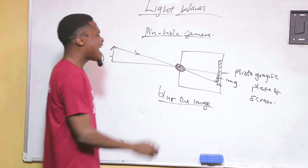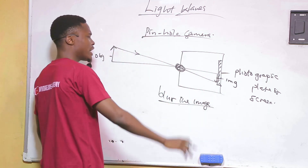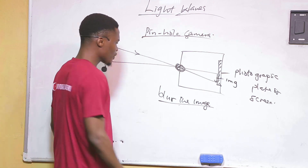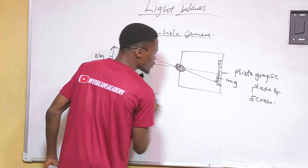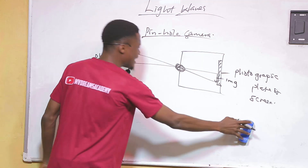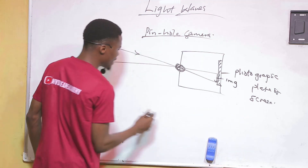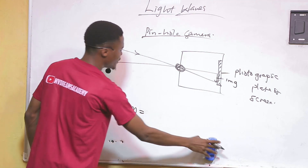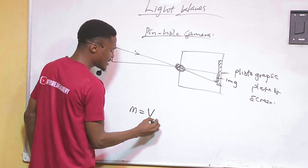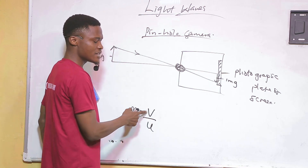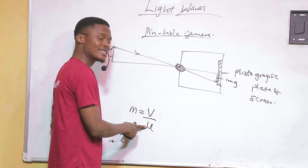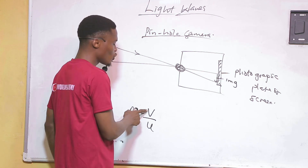The next thing they can ask about is the magnification of the image. M is used to represent magnification. You can find it in two ways: one way is image distance over object distance, where V represents image distance and U represents object distance.